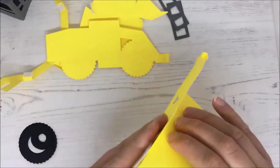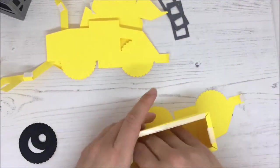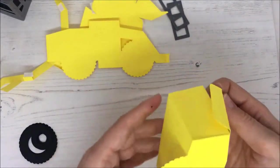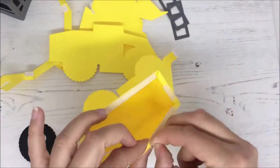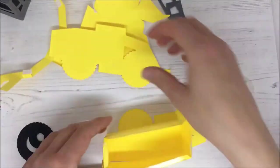And there you can see I've done sort of one, two sides of the box. And then just take the adhesive off and stick the other side on so you've got the body of the digger all done.